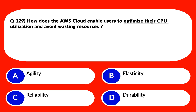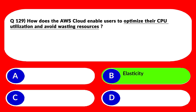The question is about optimizing CPU utilization and avoiding wasted resources. Option A is agility — agility is AWS cloud's ability to deliver IT solutions faster and more flexibly, not what we're looking for. Option C, reliability, is the ability to ensure availability and durability of data and applications — not relevant here. Option D, durability, protects data from loss or corruption — also not related. We are left with elasticity, which is the correct answer.